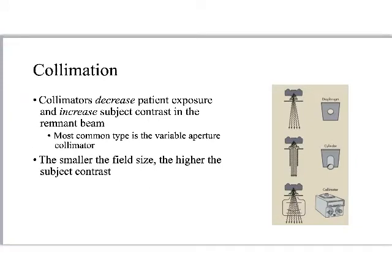Collimation and field size are sometimes used interchangeably, so I'm going to carefully define both terms. Generally, collimators decrease patient exposure and increase subject contrast in the remnant beam. The most common type used is the variable aperture collimator. As a general rule of thumb — stated at the bottom of page 276 in the textbook — the smaller the field size, the higher the subject contrast.